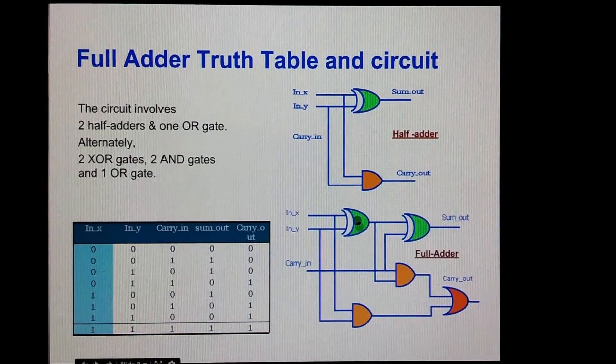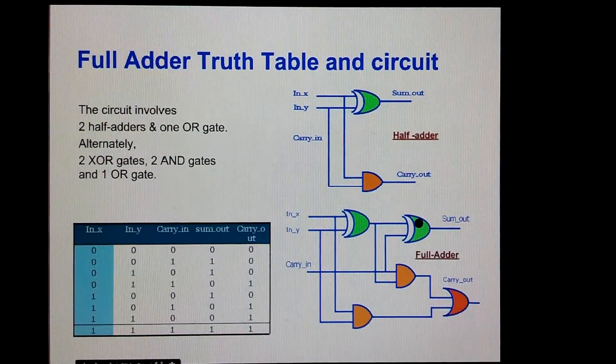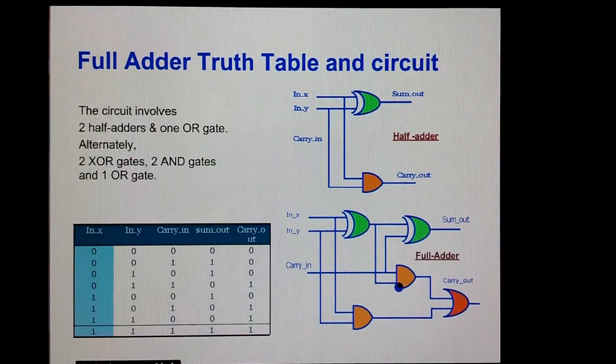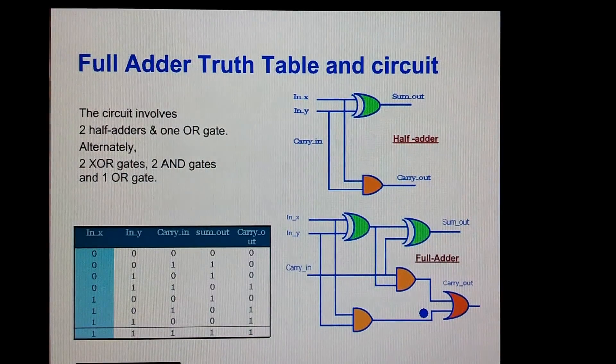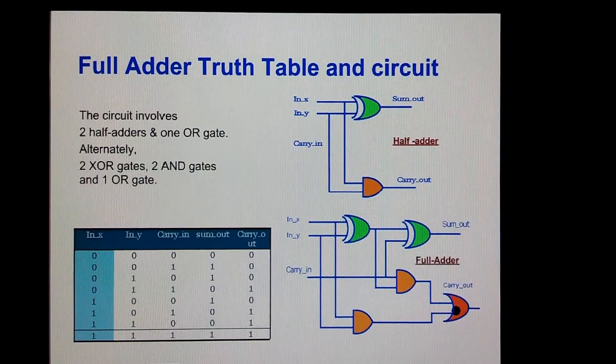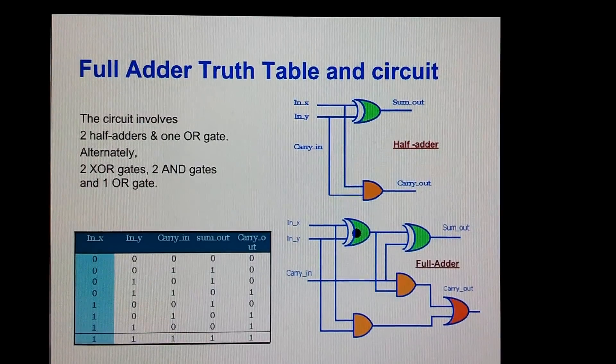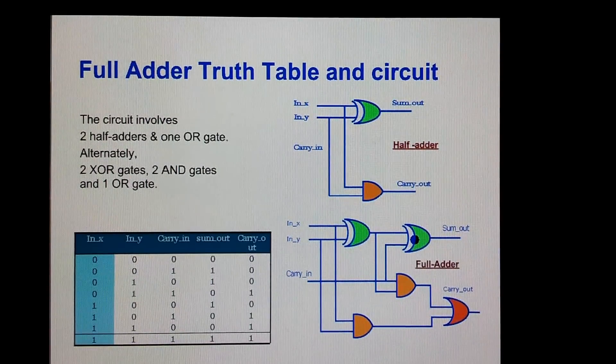This XOR gate and AND gate is the first half adder, this XOR and AND is the second half adder. We take the outputs of the two AND gates and OR them to get the carry. The sum is basically two back-to-back XOR gates.